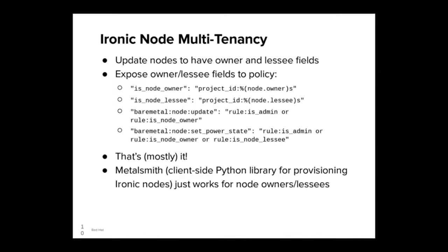OpenStack policies determine which users have access to which API actions and can be specified in an easy-to-update configuration file. Before our work, all Ironic API actions were only accessible to Ironic administrators. We added two new rules — isNodeOwner and isNodeLessee — that determine whether the user making an API request is the owner or the lessee of the node. With those in place, we can now update the other policy rules. For example, we can update bare metal node update to allow access if the user is an admin or the owner, and update bare metal node set power state to allow access if the user is an admin, owner, or lessee.